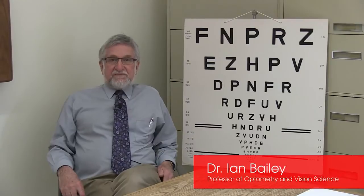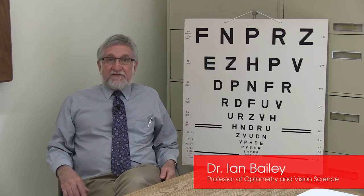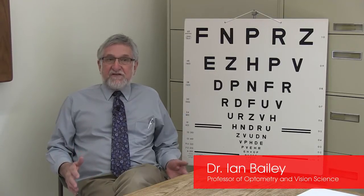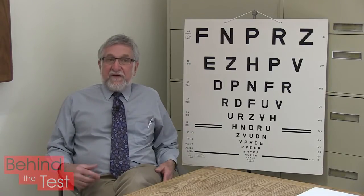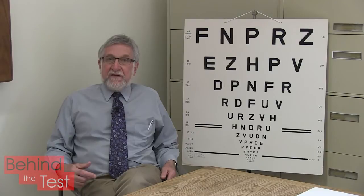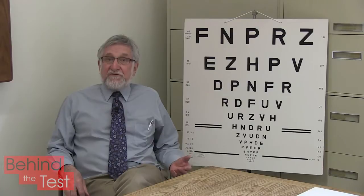The Bailey-Lovie test is really a set of chart design principles that lay down the rules for measuring visual acuity. The important thing about the Bailey-Lovie design principles is that the visual task is the same at each size level. As you go from one size level to the next, it always represents the same amount of change in vision — whether you're at the top of the chart with very poor vision or near the bottom with good vision, each step always carries the same meaning.